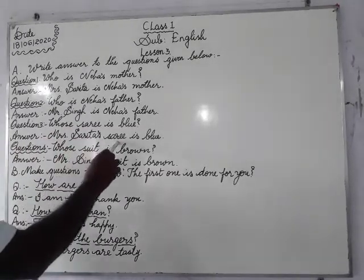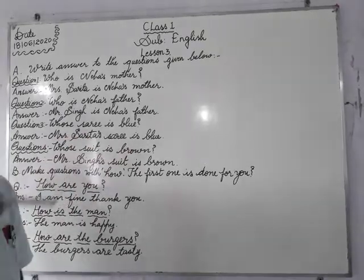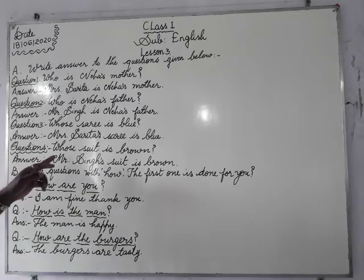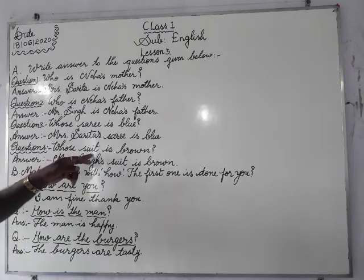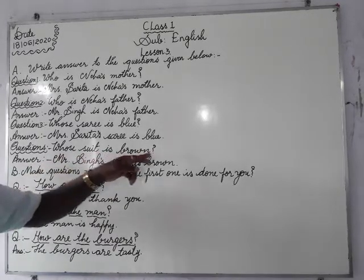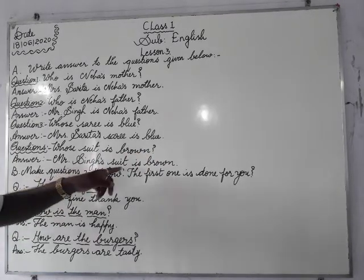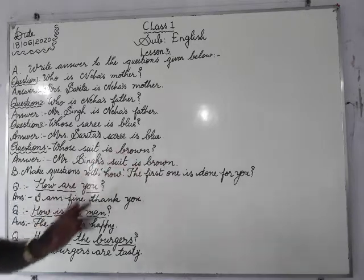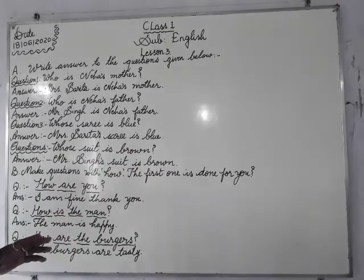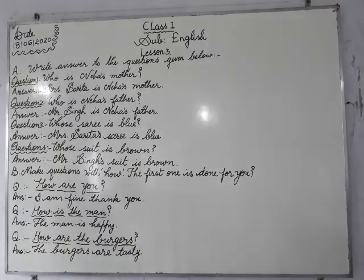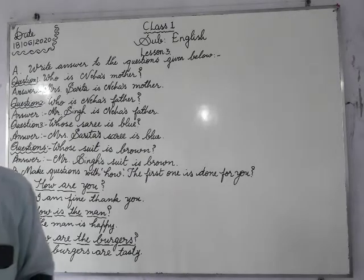Mrs. Sarita's saree is blue. Next question: Whose suit is brown? Mr. Singh's suit is brown. Now another type of question — we have to answer. An answer is given and you have to make the question for that answer.